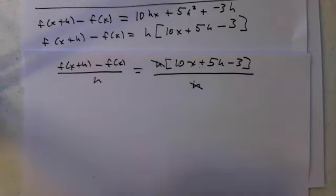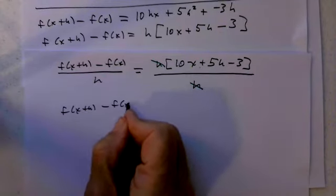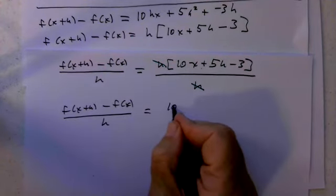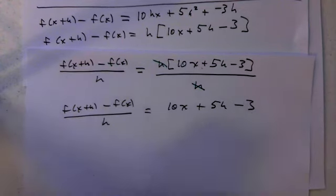And then the result for f(x+h) minus f(x) over h becomes 10x plus 5h minus 3.